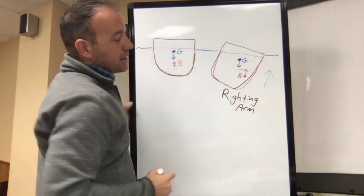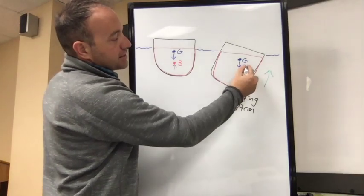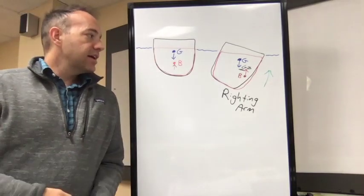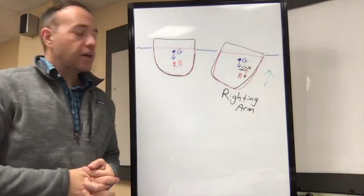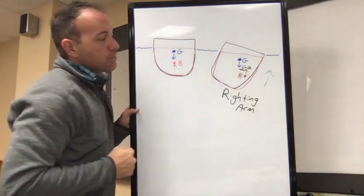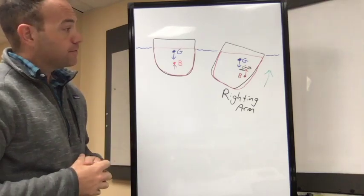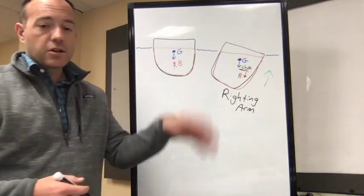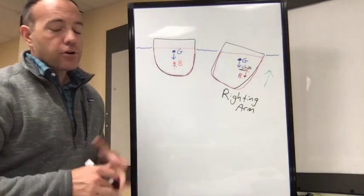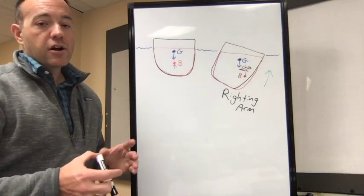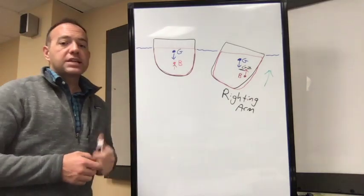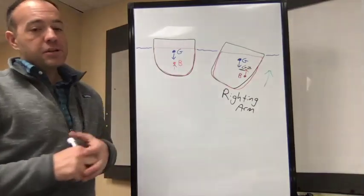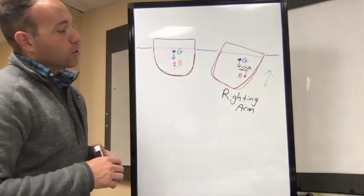The righting arm, or righting moment, is designated GZ. The wider GZ gets, the more the vessel wants to right itself. If this vessel tilted over further, the center of buoyancy might move further and cause the vessel to right itself. There comes a point of diminishing returns though — at some point the vessel will roll over. For Coast Guard stability questions, knowing where the center of gravity and center of buoyancy are is going to be important as we move forward.